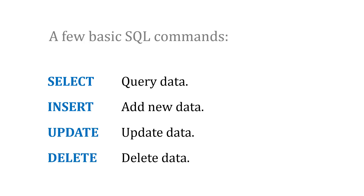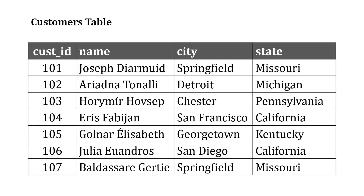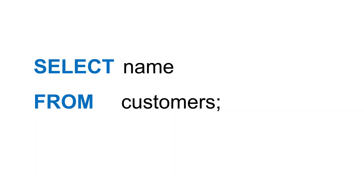Let's try an example of this. Let's say in our database we have a customers table, and it kind of looks like an Excel spreadsheet. It's got information about our customers, including their city and their state. And maybe what we want is to just pull out the names of our customers — we want to query the database for that information. We can do that by saying: SELECT the name from the customers table. I don't need the city and the state, I just need the name.